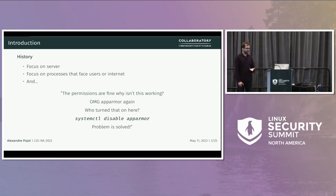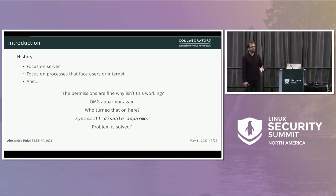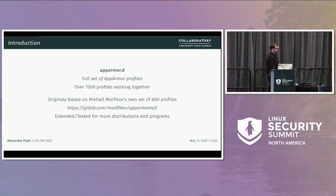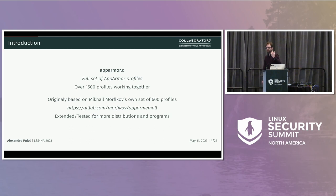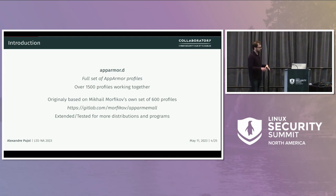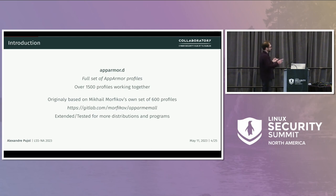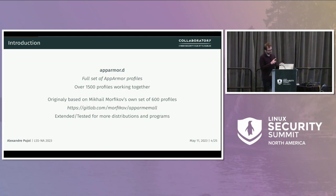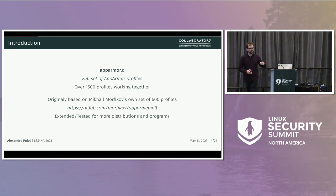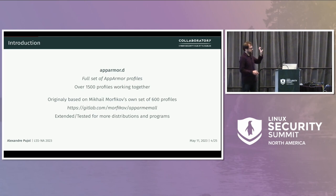And like every MAC policy, we always have the same issue — the first results on Google are 'how do I disable this.' So that's kind of a bit of an issue. Here is AppArmor.d, which is a full set of AppArmor profiles. When I say full set, there are a lot of profiles, but they are expected to work together in order to ensure that you confine most of the system. Credit is due to some other people too — Mikhail Morfikov — because this work was originally based on his repository. I examined it, added my profiles, and did a lot of work regarding testing to ensure it works everywhere, since it was mostly focused on Debian originally.